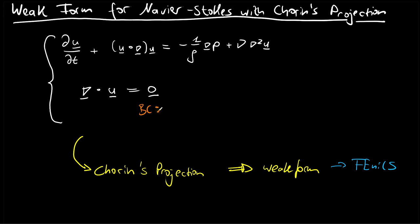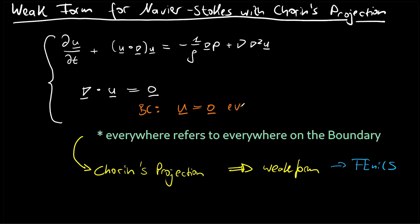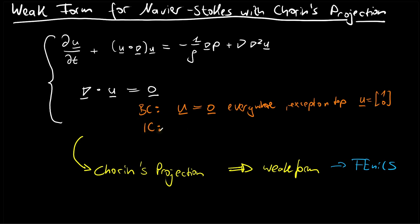For the boundary condition, I want to mimic the lid-driven cavity: the velocity is zero everywhere except on the top, where u points with one in the x-direction and zero in the y-direction. For the initial condition, I want to set the velocity field to zero, so u at t equals zero for all positions x is the zero vector. Although we are considering this particular scenario for the lid-driven cavity, it can also be applied to almost any Navier-Stokes problem since the steps are mostly the same.